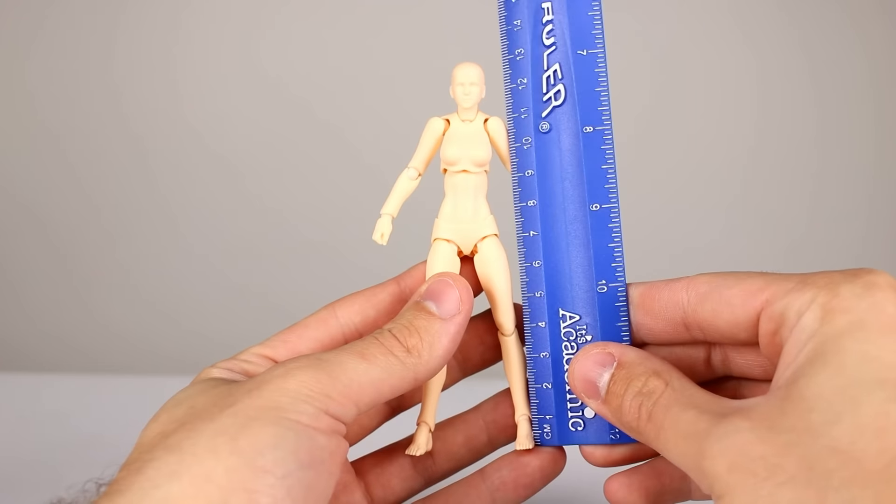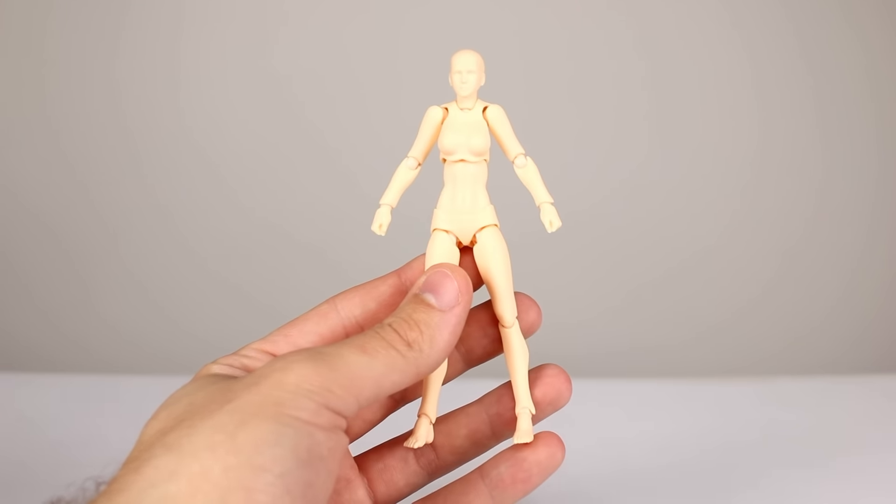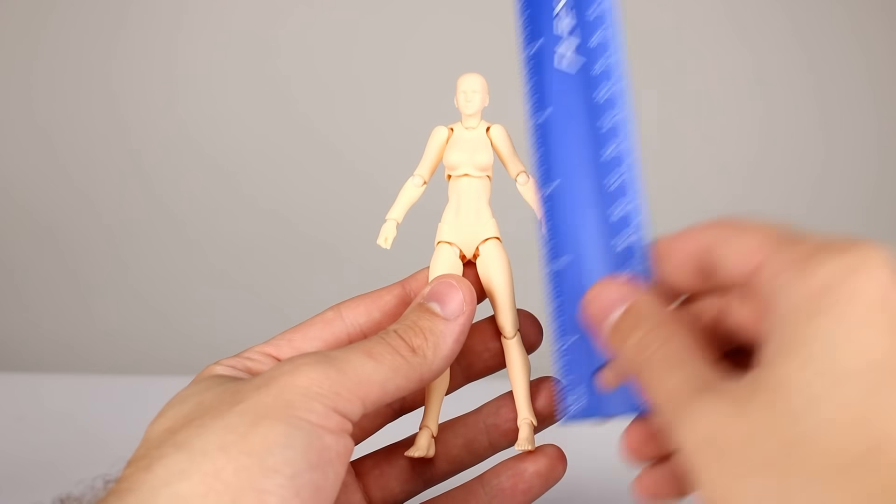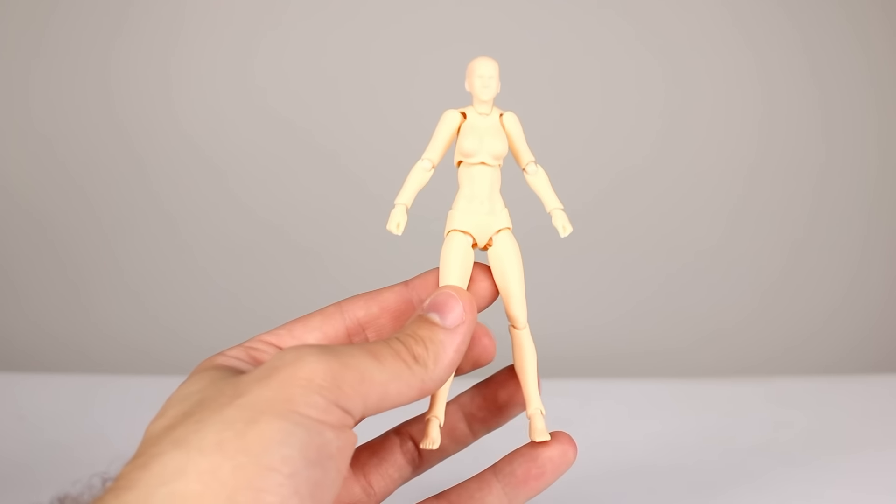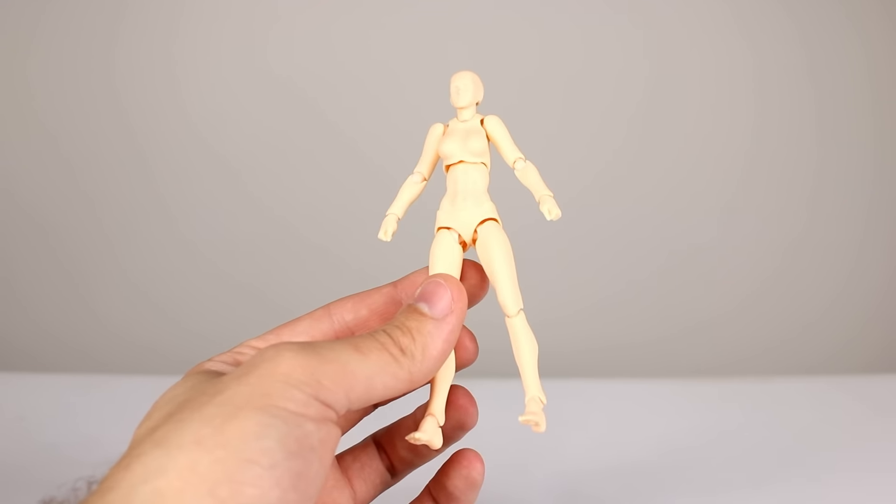This figure stands just about 13, a little bit over 13 centimeters just by the tiniest bit, and that makes her just about five and a quarter inches. So she's a little bit shorter and obviously rather petite.